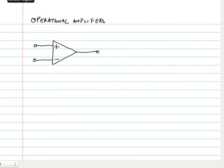An operational amplifier has a symbol that's drawn like so. It's a triangle with two inputs and one output. The first input is drawn with a plus sign and is called a non-inverting input. The other input is drawn with a minus sign and is called the inverting input.